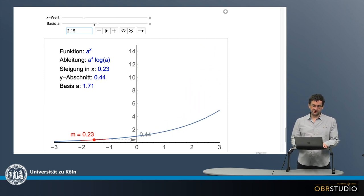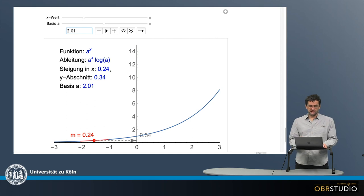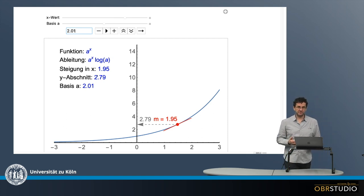If I change the basis to a much smaller number, something like maybe 2, it's the reverse: the value of the slope is always smaller than the y value. No matter what x I choose, the derivative is always smaller than the y value of the function itself.